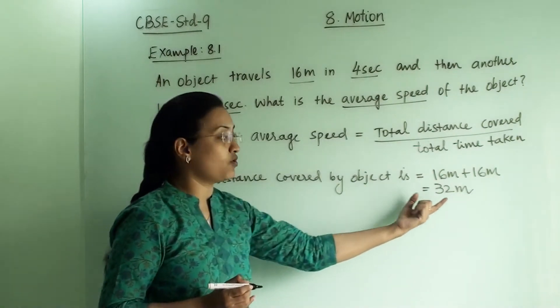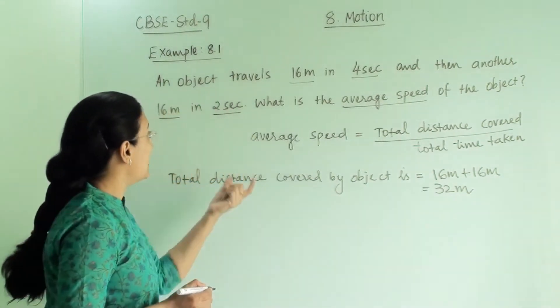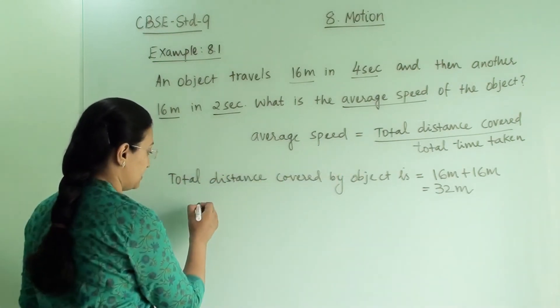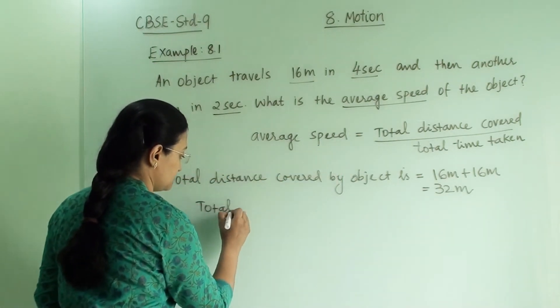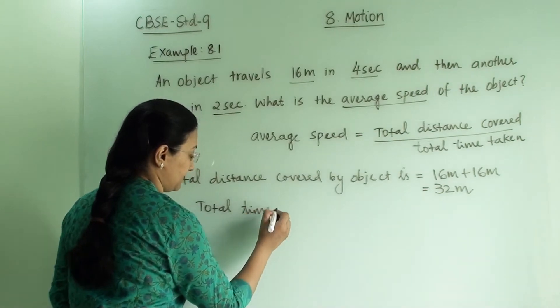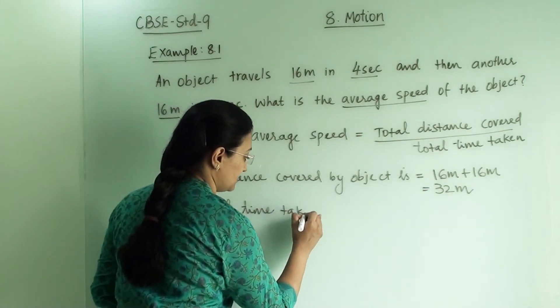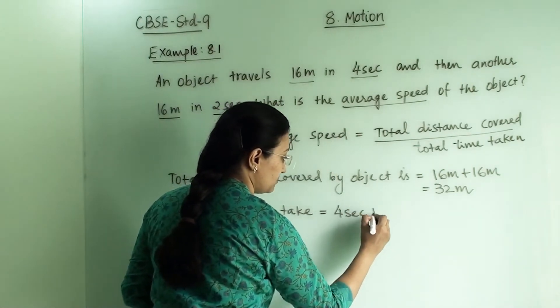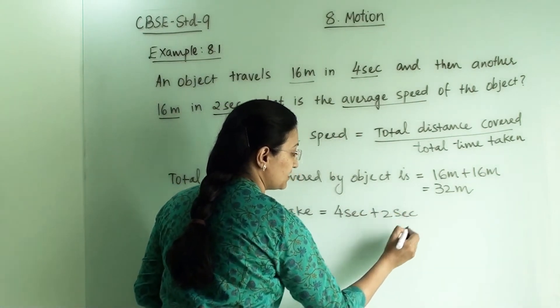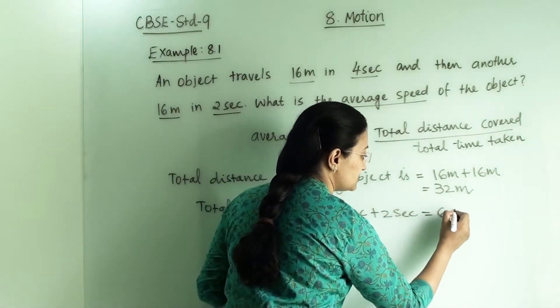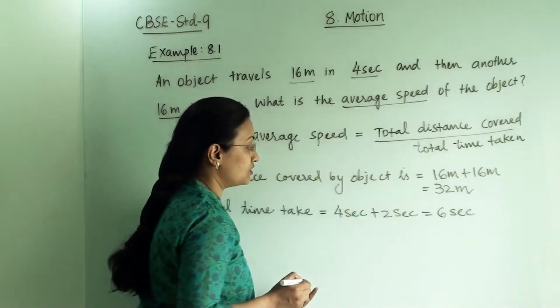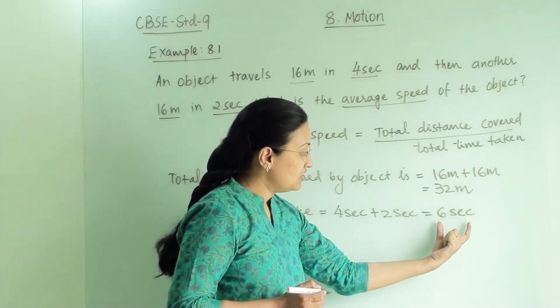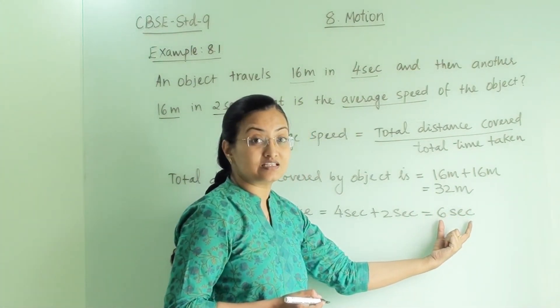So 32 meter this object has travelled. Now 4 second and 2 second is the time. So here total time taken equals to first is 4 second plus 2 second. So we will get here 6 second. So total time taken is 6 second. So to cover 32 meter the object has taken 6 second time.